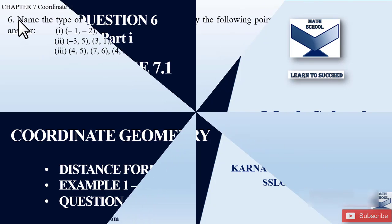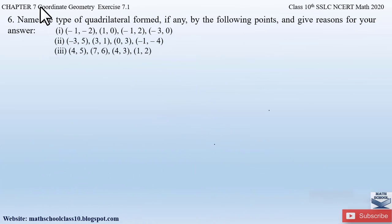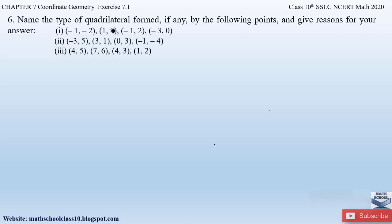Now let us begin with the video. Question number 6 from exercise 7.1 chapter 7 coordinate geometry says: name the type of quadrilateral formed by the following points and give reasons for your answers. There are three parts to the question. Before solving this problem let us know what is a quadrilateral. A quadrilateral is a four-sided figure formed by four vertices, and we have to determine which type of quadrilateral is formed by the given four vertices.